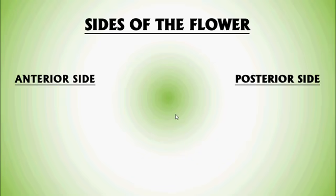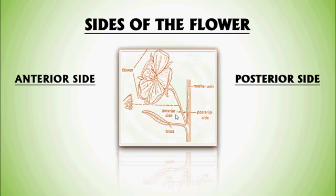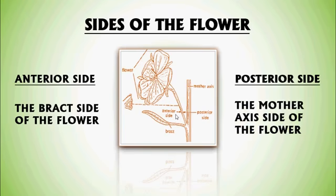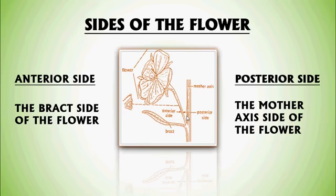Sides of the flower — Anterior side and Posterior side. The Bract side of the flower is called the Anterior side. The Mother Axis side of the flower is called the Posterior side. The surface of the flower facing towards the Bract is called the Anterior side, and the surface facing towards the Mother Axis, that is the Stem region, is called the Posterior side.